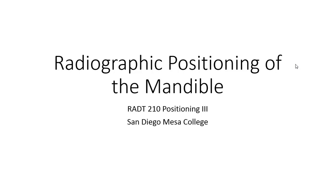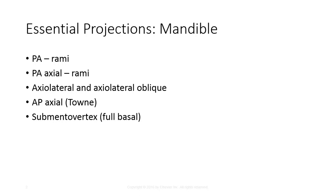In this video, we'll be going over radiographic positioning of the mandible. Essential projections of the mandible include the PA for the rami, PA axial for the rami, axial lateral and axial lateral obliques, AP axial Towne's view, and submento vertex.